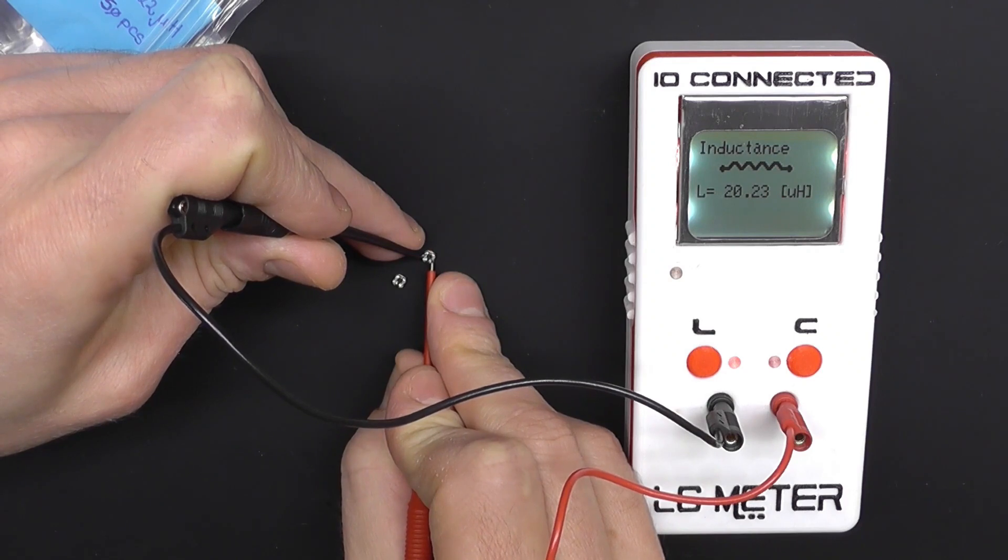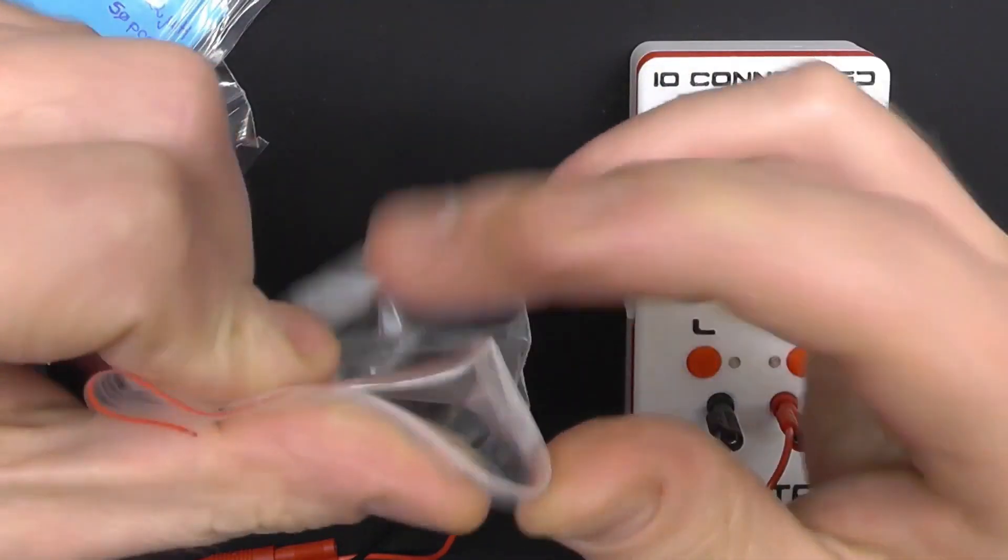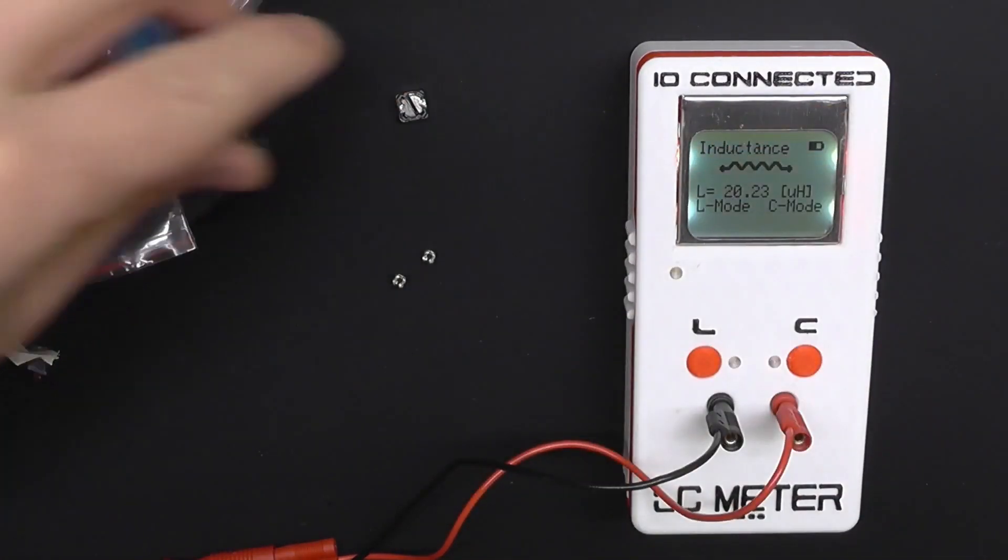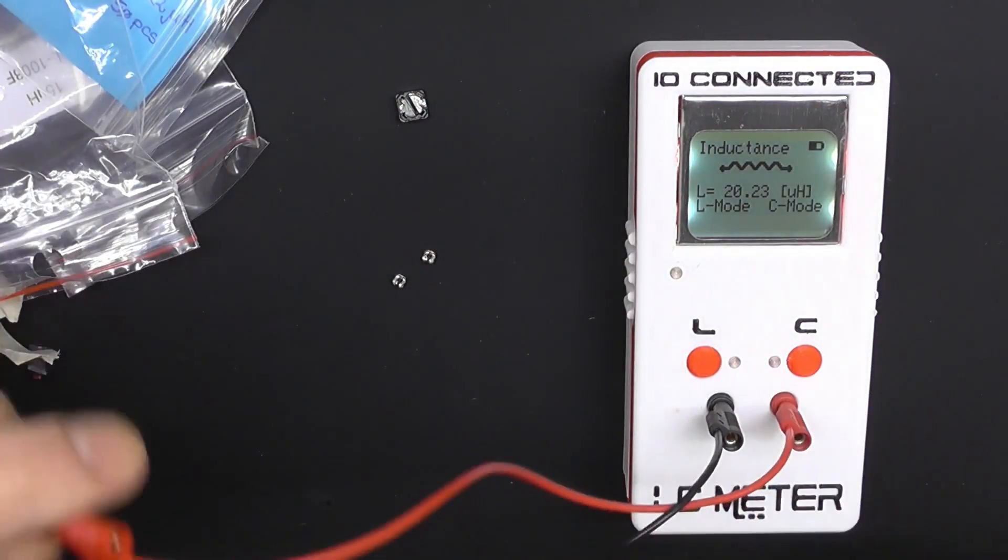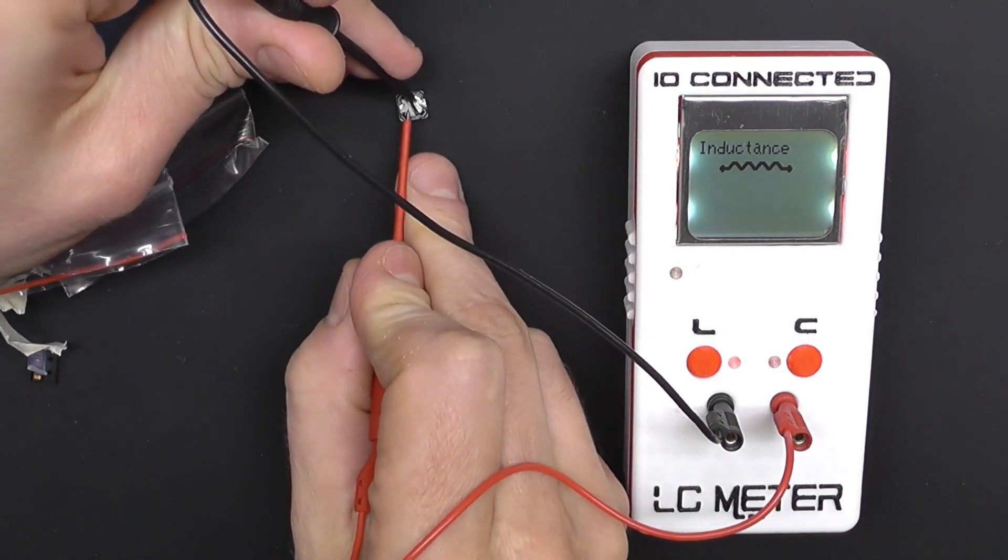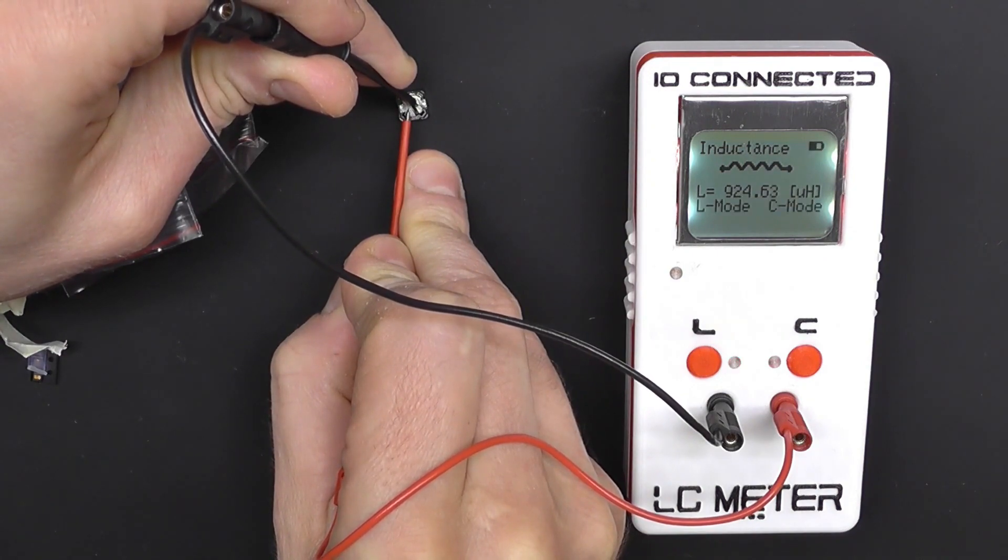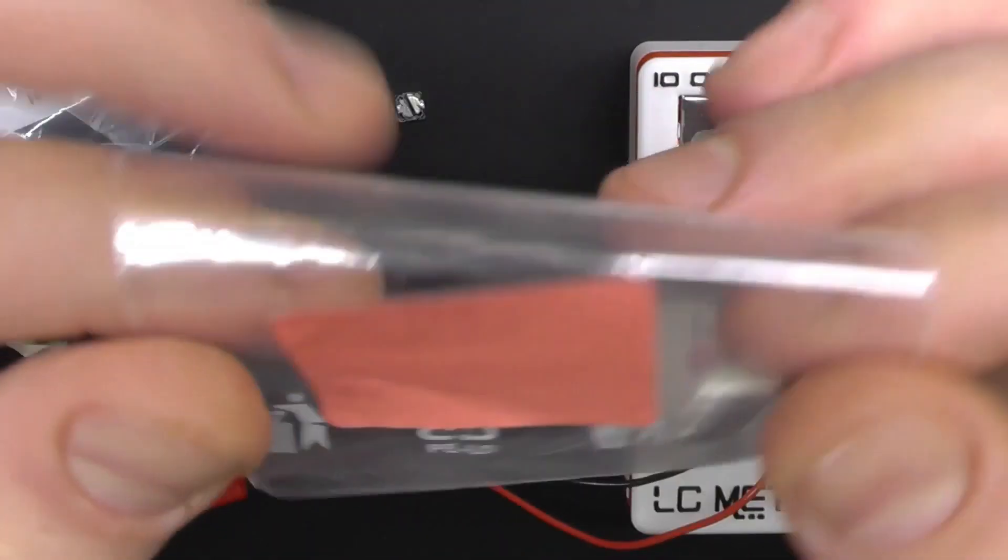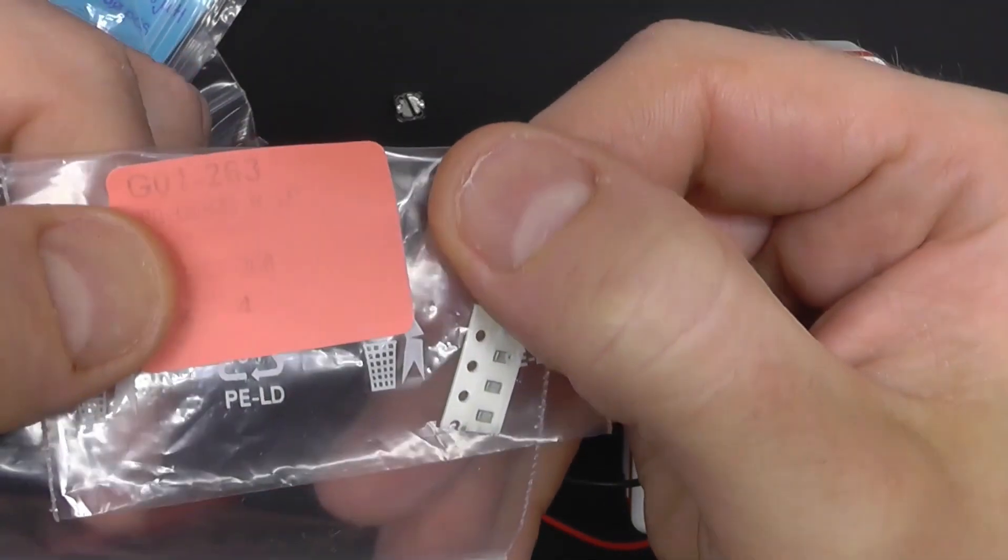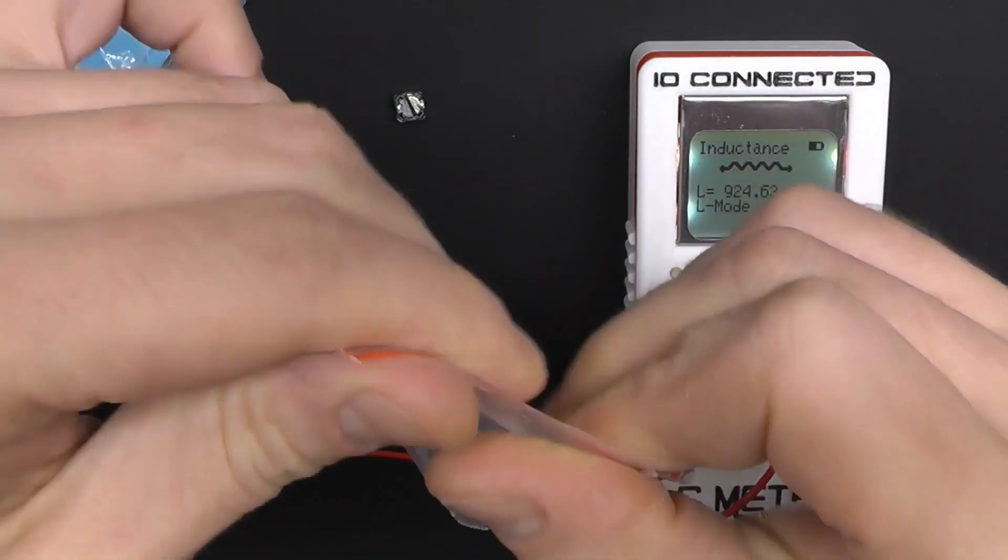So I would take this one here. This is a bigger inductor, it should read 1 millihenry or 1000 microhenries. All right, it's pretty good. And it gets smaller. These are 0805 SMD package. I've managed to measure even smaller packages with these probes, but it's pretty difficult to do it on camera. This should be 8.2 picofarads.